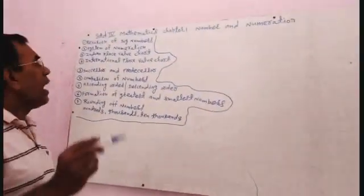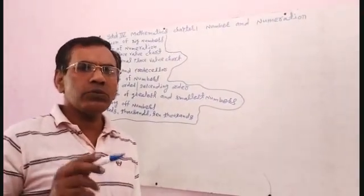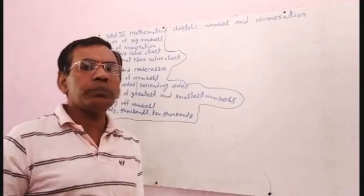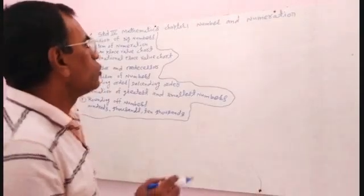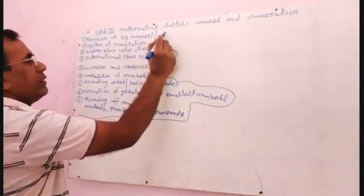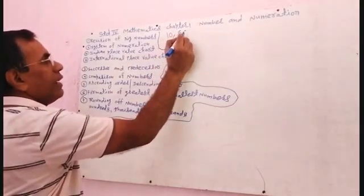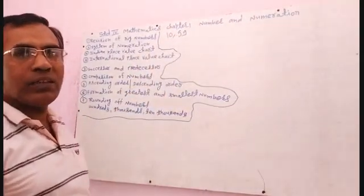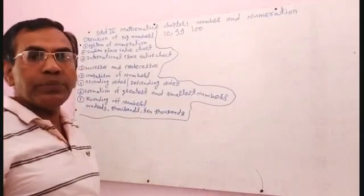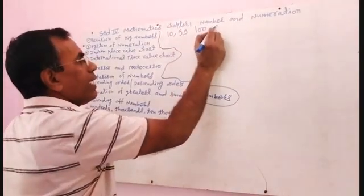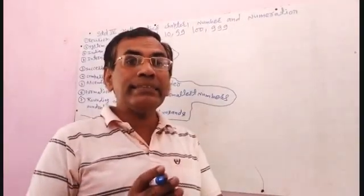First, I am teaching you revision of big numbers. In previous classes, you have read about big numbers and the smallest number. As you know, the smallest 2-digit number is 10. The biggest 2-digit number is 99. The smallest 3-digit number is 100. The biggest 3-digit number is 999. Similarly, you can arrange many numbers.